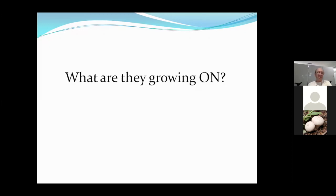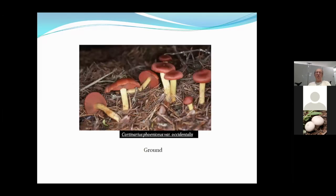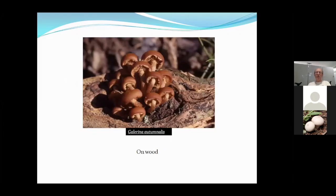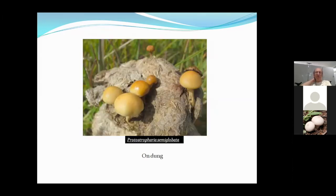The next thing is what they're growing on — the substrate. Are they growing on the ground, like this Cortinarius species? Or on wood, like Galerina autumnalis? This particular little mushroom is deadly toxic — it has the same amatoxins as deadly Amanita mushrooms. A good rule of thumb: if it's got brown spores and it's growing on wood, don't eat it. They can also grow on dung, like Protostropharia semiglobata.